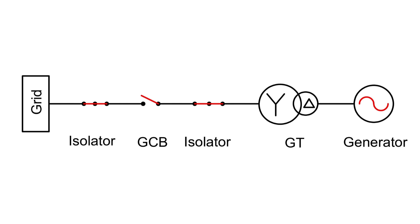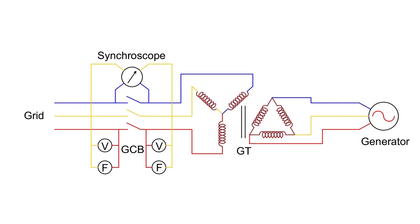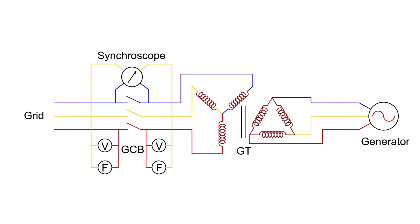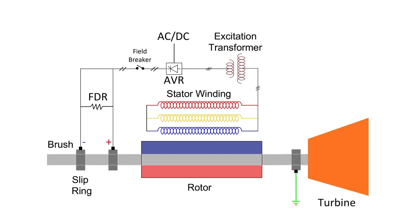For synchronization, first the isolators are closed and then the close command is given to the GCB. But before closing the GCB, we need to check voltage magnitude and frequency using voltmeters and frequency meters on both the grid and generator sides of the GCB.